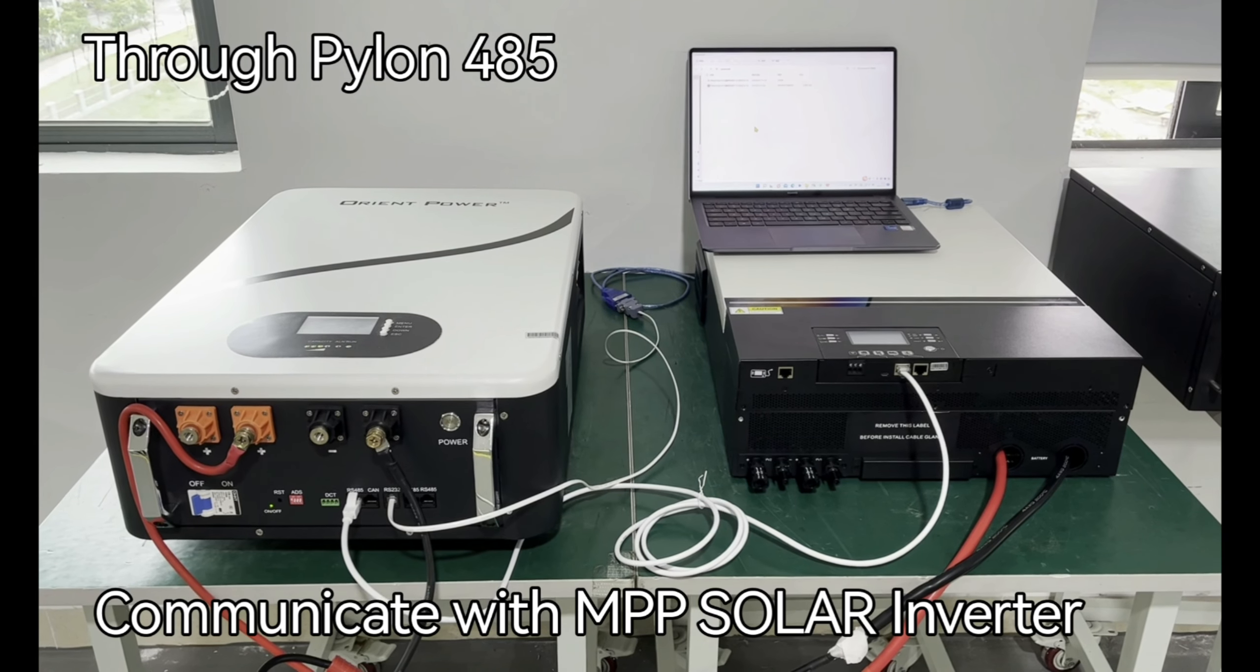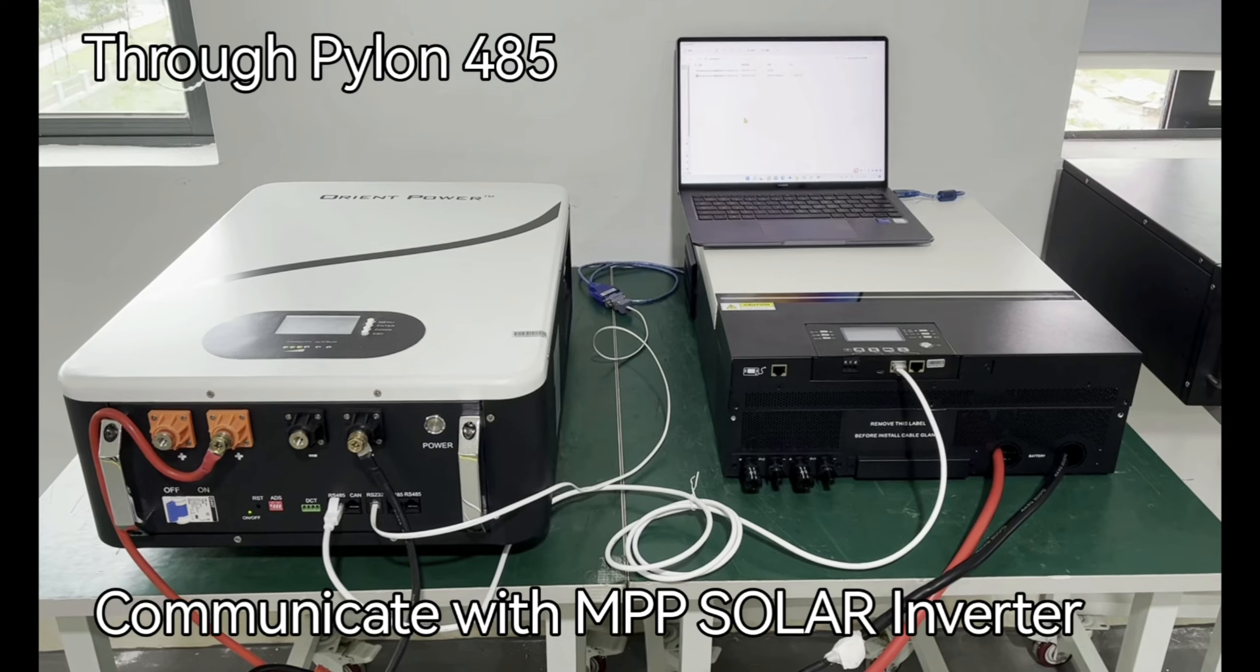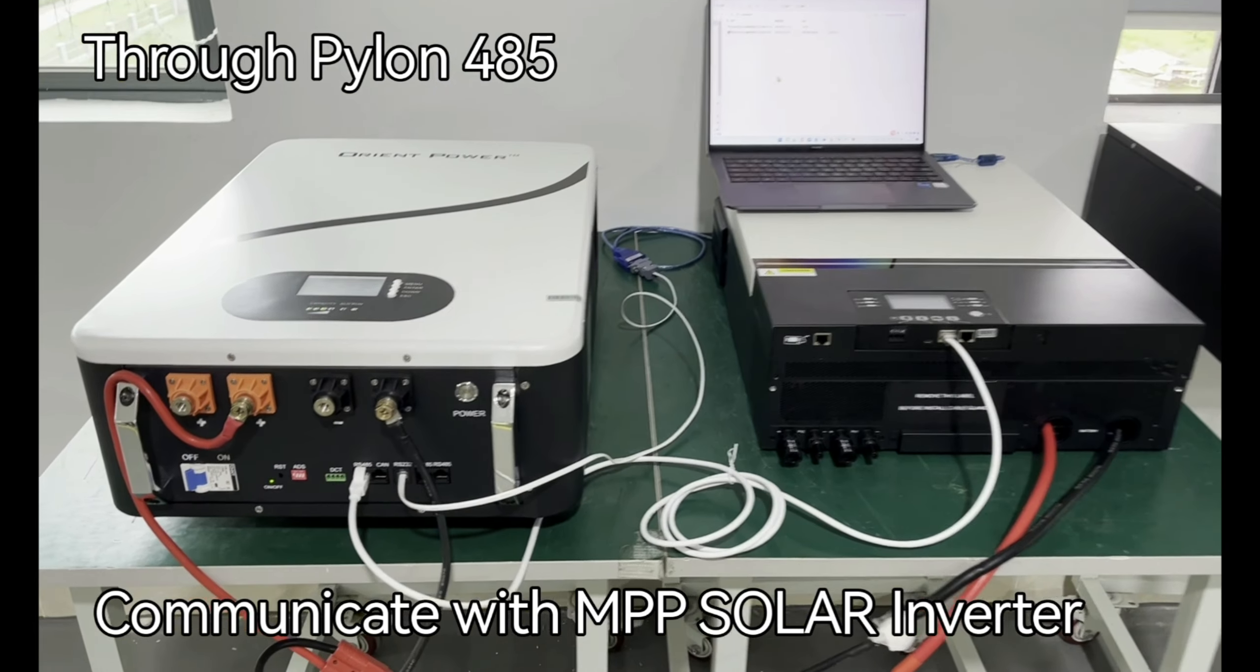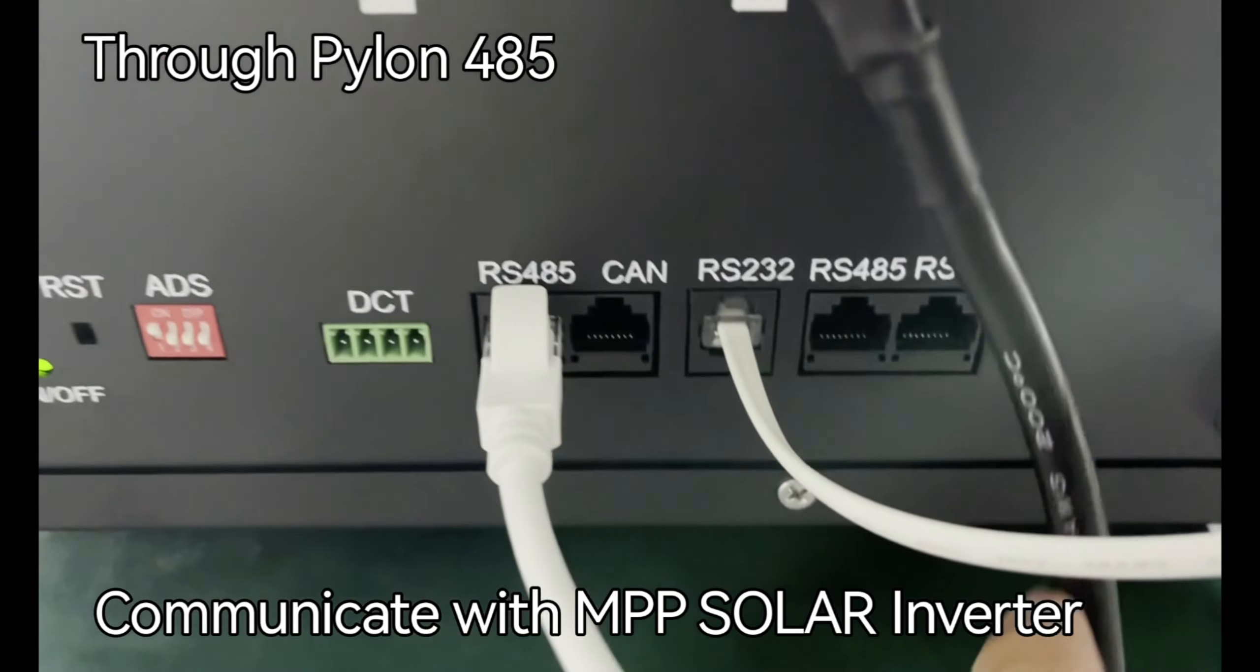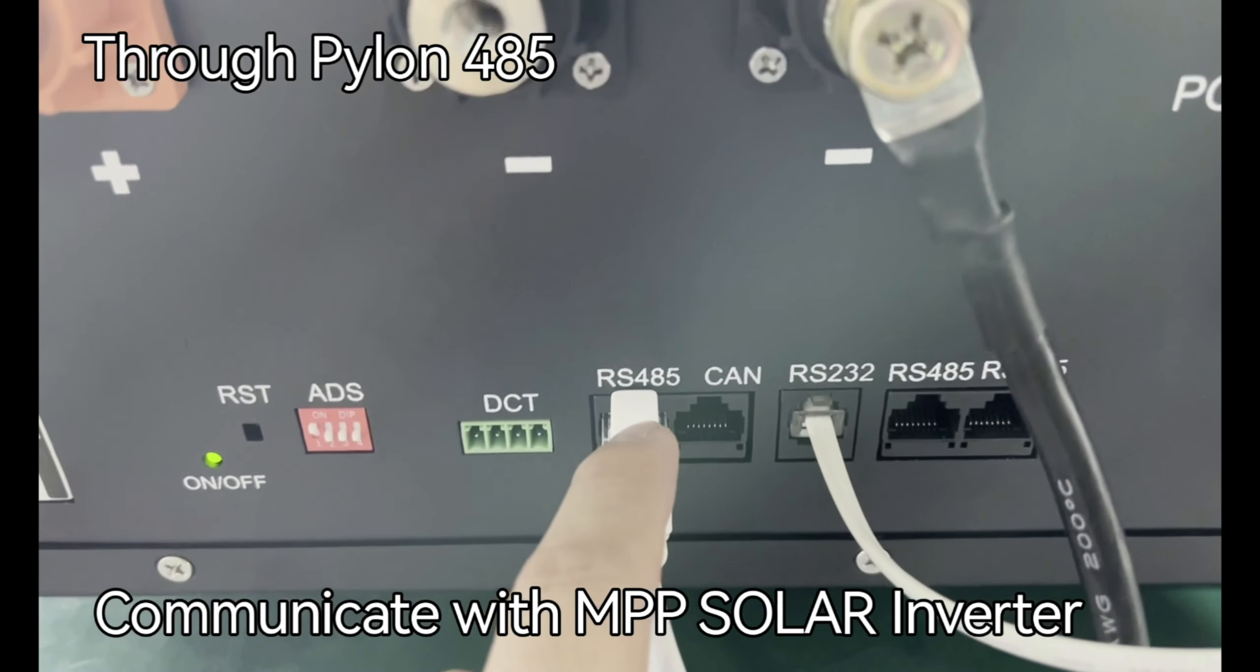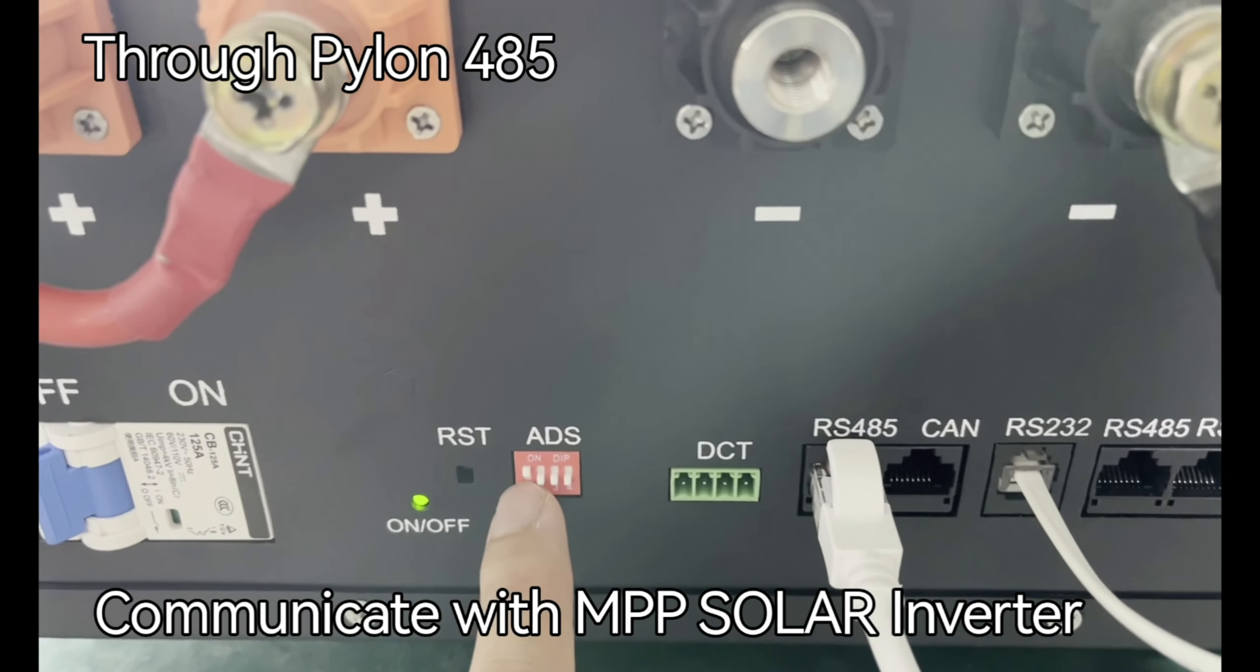This video is for communicating with MPP Solar Inverter with Powerwall Battery. The communicating cable is special made, you can purchase or make it yourself. It's connected to RS485.